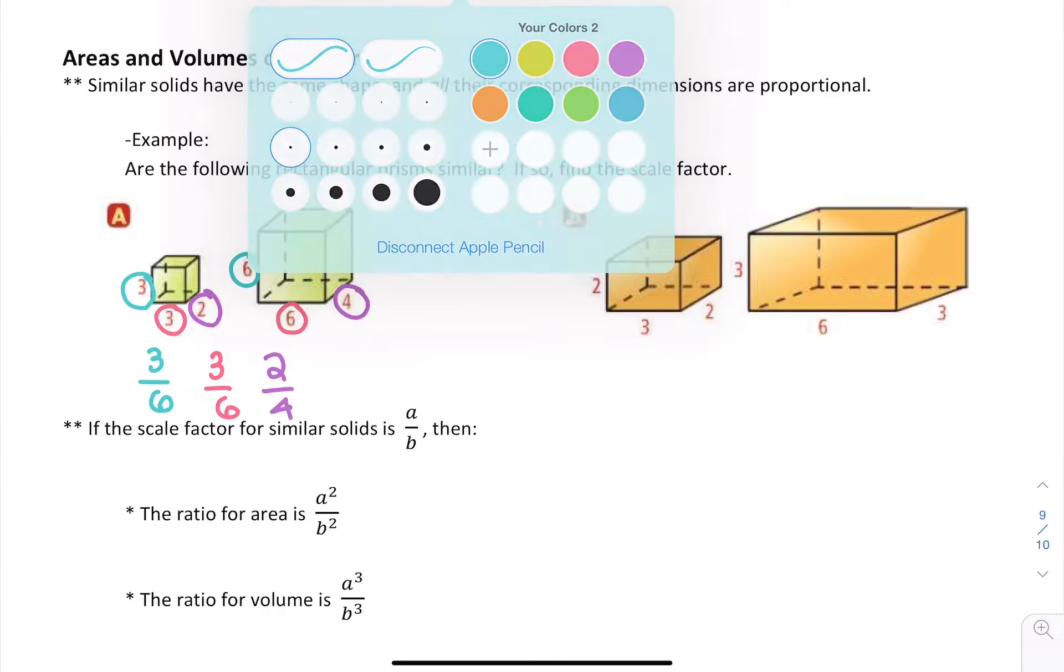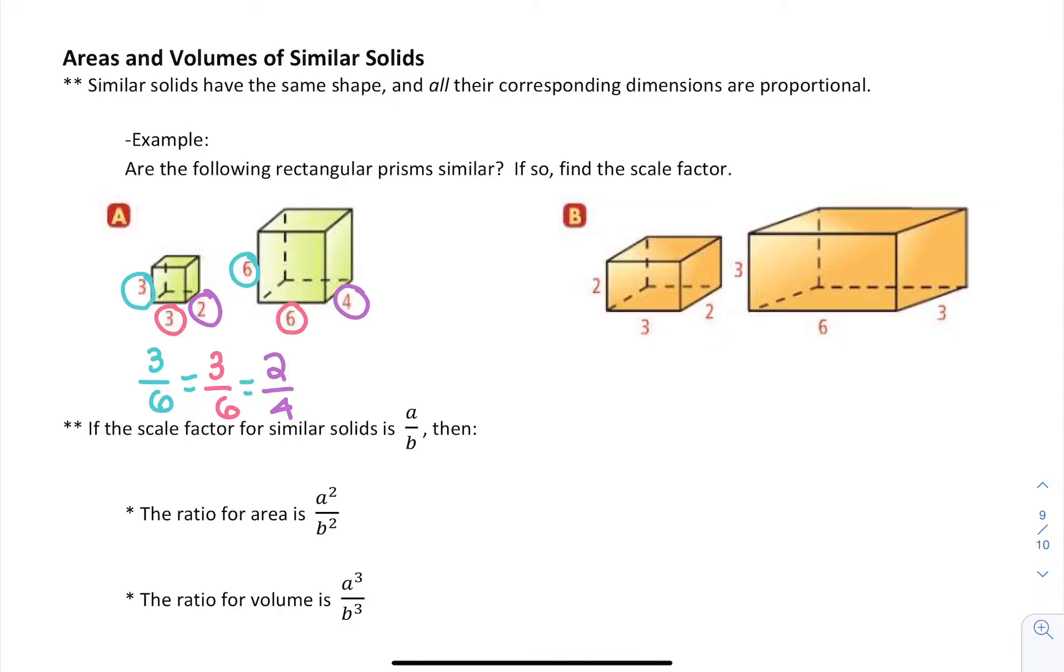Now we ask ourselves, are these proportional? Are they equal to each other? Since we know 1 half is equal to 1 half, that works. So yes, they are proportional.